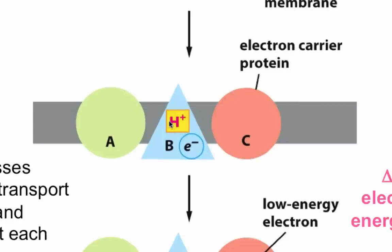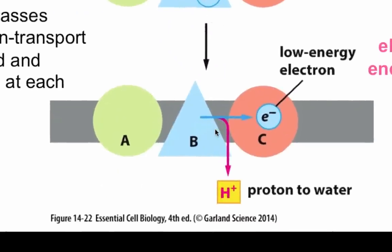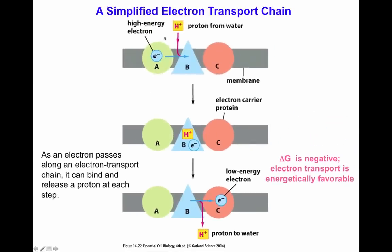Protein C is another electron carrier that will be reduced and receive an electron. Complex B donates its electron to complex C, generating a positively charged intermediate. That intermediate donates the proton to form a water molecule and donates the now low-energy electron to molecule C. What you can appreciate is that you went from complex A with a high energy electron all the way down to molecule C with a low energy electron. The energy change was used to pump a proton from one side of the membrane to the other.